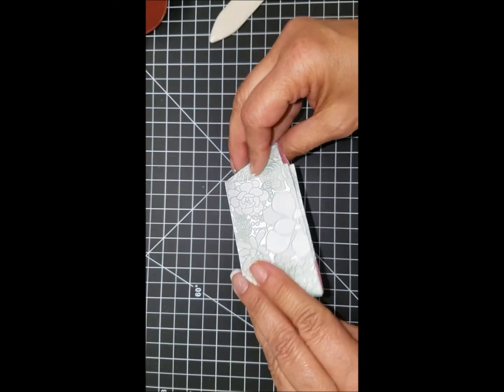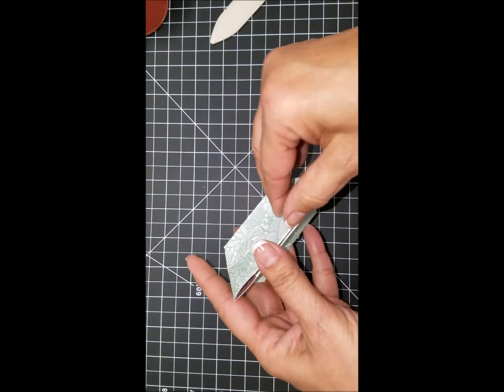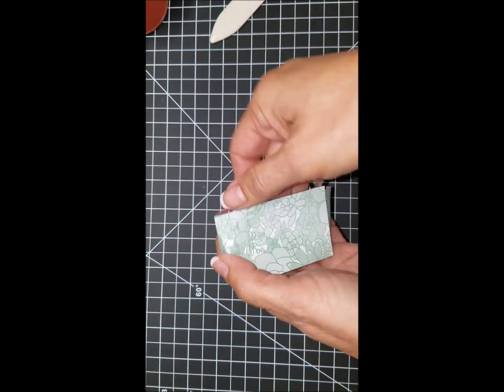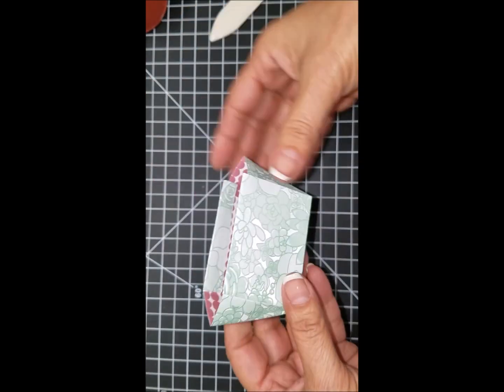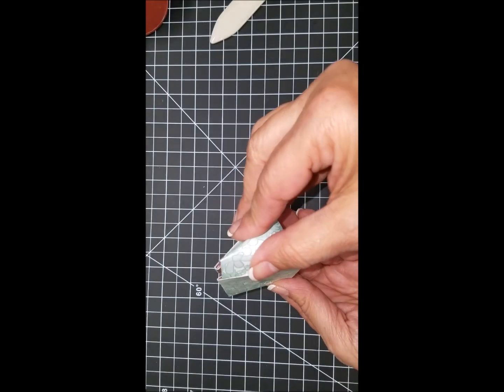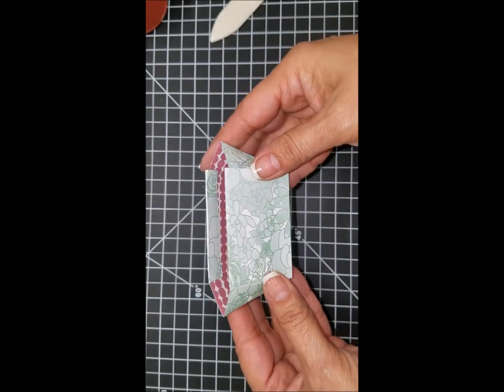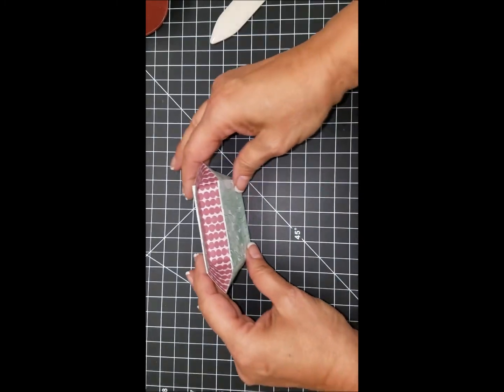I pull it open, kind of fluff it up a little bit and there you've got your little cute bag. Now we're going to need the handles for the bag. I've gone ahead and cut some cardstock into one quarter by five inch strips.